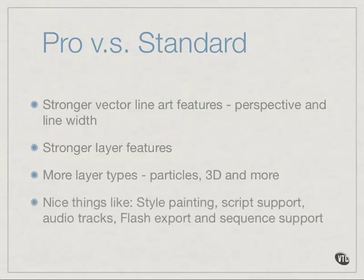There are many nice things in the Pro version, like style painting, where you can create styles of illustration or animation, save those styles, and quickly deploy them to new sequences you may be working on. There's also script support, so if you've got predictable motion or something you want to repeat or create some randomized motion, you can do that with scripts very easily. One of the most significant differences is that the Pro version does support audio, so you can edit audio and lip sync with your animations very quickly.